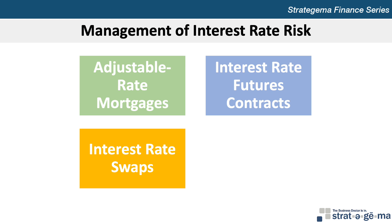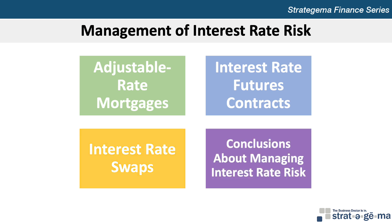The fixed-rate outflow payments can be matched against the fixed-rate mortgages held so that a certain spread can be achieved, and the variable rate inflows from the swap can be matched against the variable cost of funds. Although these hedging strategies are useful, it's almost impossible to eliminate interest rate risk completely. The potential prepayment of mortgages can't be fully accounted for, as homeowners often pay off their mortgages before maturity without much advance notice, so SIs can't perfectly match the interest rate sensitivity of their assets and liabilities.